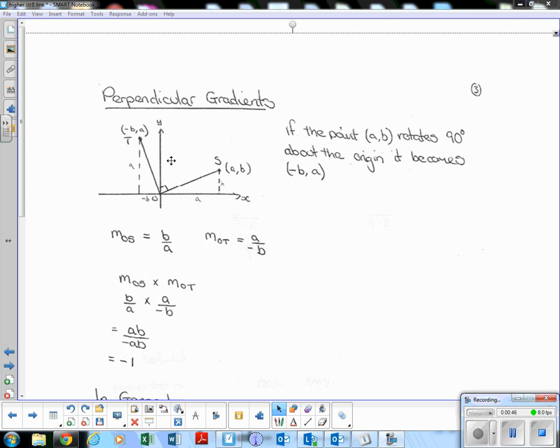This point B here would go to there. S A here would end up up there. So the coordinate before rotation would be A, B, after rotation would be negative B, A, B to the left and A up.